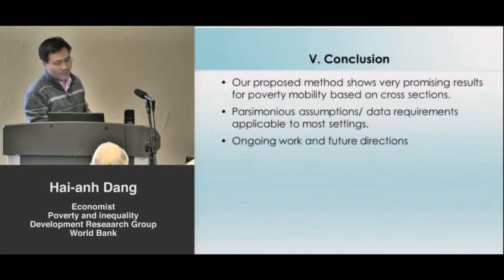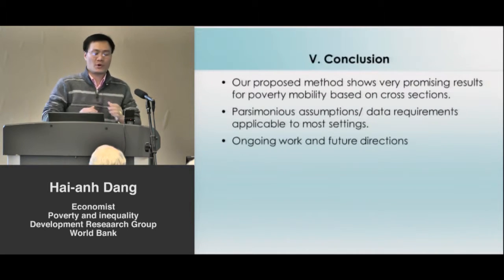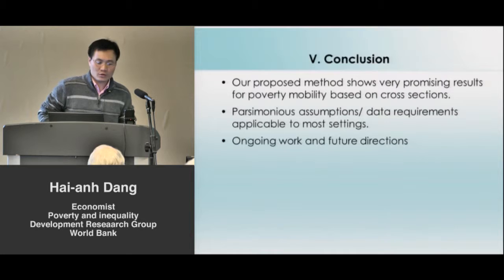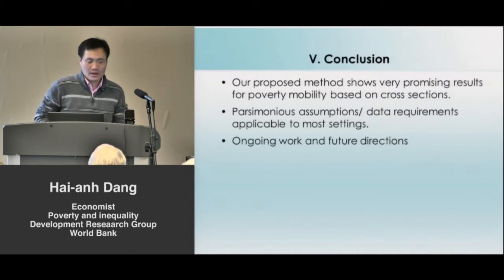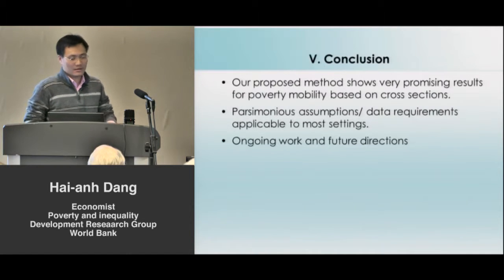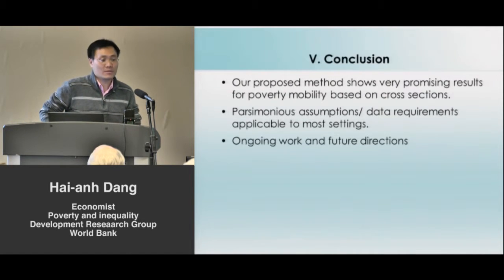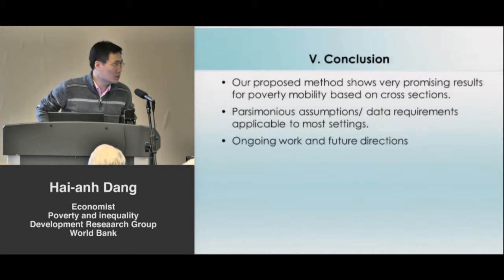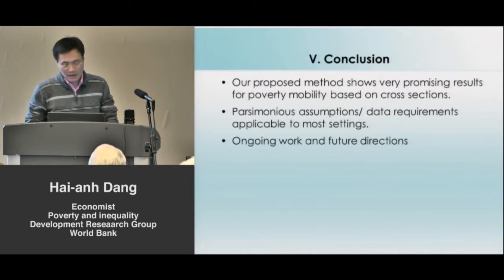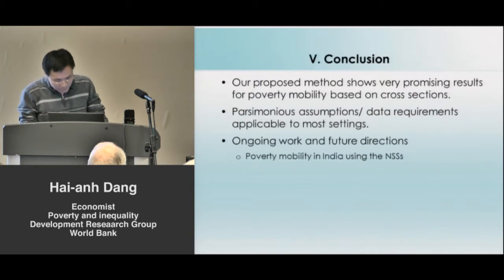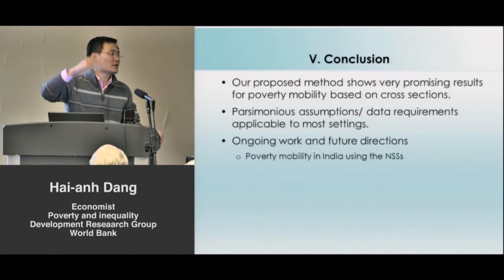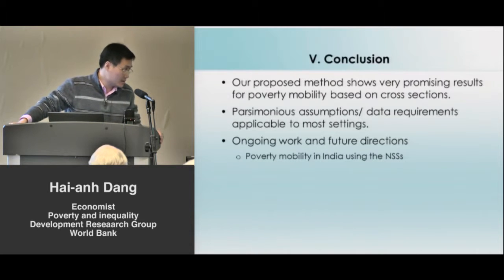Our proposed method shows very encouraging results for looking at poverty mobility just based on cross-sectional household surveys, with parsimonious standard assumptions. We are applying the method to other countries and thinking about future directions — including applying it to India using the national sample surveys, which are very large and allow more finely disaggregated population breakdowns.